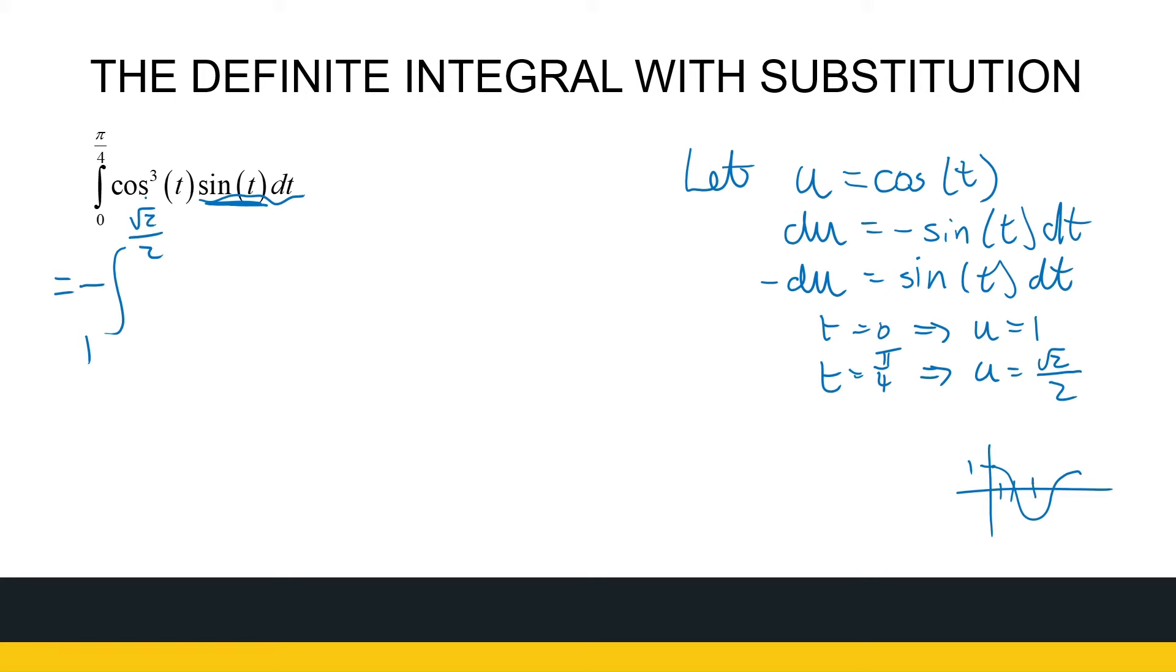So now I do my substitution and I've got the integral from 1 to root 2 over 2 of minus u cubed du. So that's minus, and now I can find the antiderivative. A quarter u to the power of 4 between root 2 over 2 and 1. And that with a bit of work should give you 3 over 16. You can check that if that's correct. It's just calculator work.